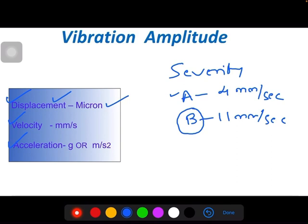Acceleration is used mainly for high RPM machines. The unit is g or meter per second squared. 9.81 meter per second squared equals 1 g.